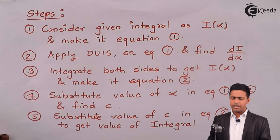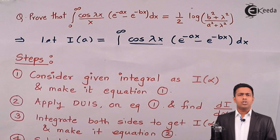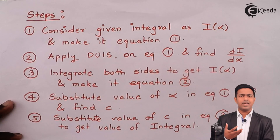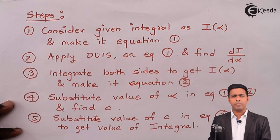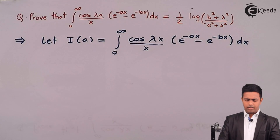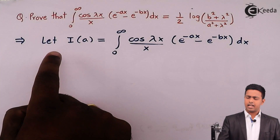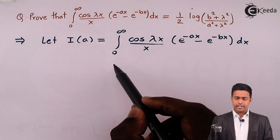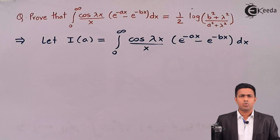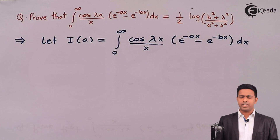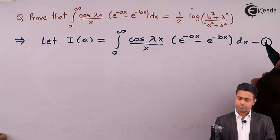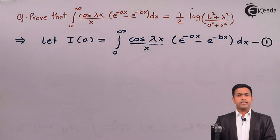In our case we have parameters a and b. So instead of taking α as a parameter, we may take a as a parameter or b as a parameter. Here I have considered a as the parameter and written: let I(a) = integral from 0 to ∞ of [cos(λx) / x] · (e^(−ax) − e^(−bx)) dx, and I will call this equation number one.